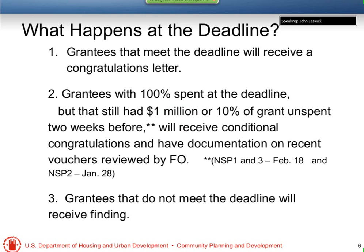So what happens at the deadline? If you meet the deadline, you will receive a congratulations letter. If you meet the deadline at 100% but had a million dollars or 10% of your grant unspent two weeks before — for NSP 1 and 3 that is February 18th, and for NSP 2 it was January 28th — you receive a conditional congratulations letter, and we will ask you to send documentation to your field office for a voucher review to ensure there were no issues. Just yesterday we found that one NSP 2 grantee may have missed the deadline, and we got that information through the voucher review. This is how we do quality control.